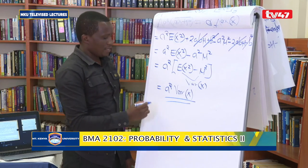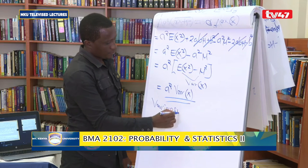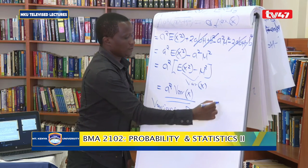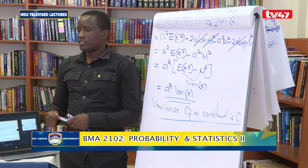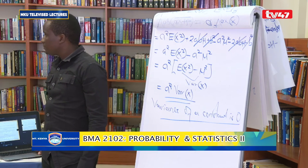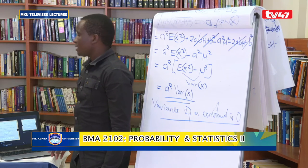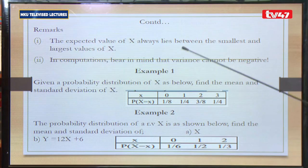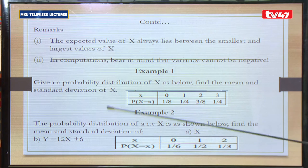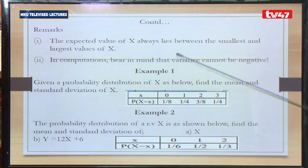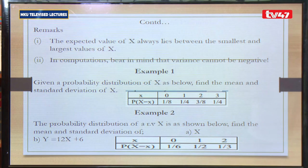We notice that the variance of a constant is 0 — anytime you get the variance of a constant, the result is supposed to be 0. Two remarks: first, the expected value of x always lies between the smallest and largest value of x. Second, in computations, variance cannot be negative, so there is no case where we calculate variance and get a negative result.